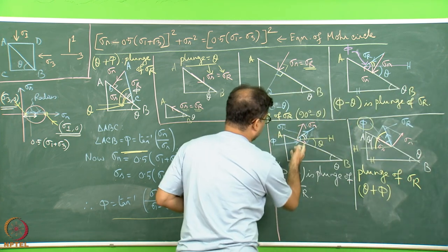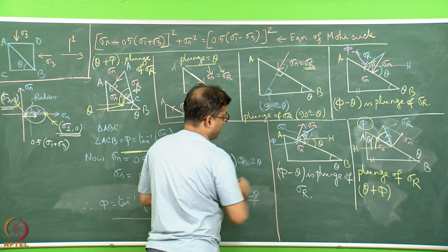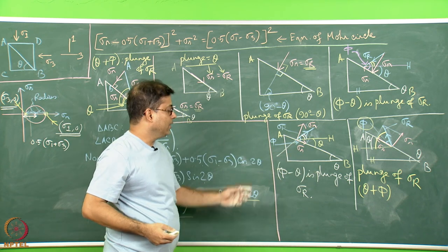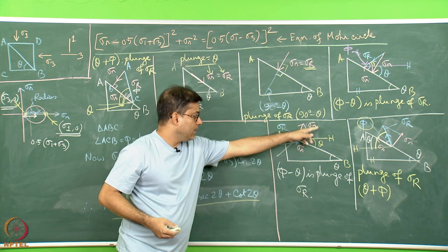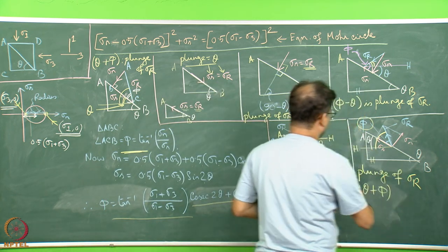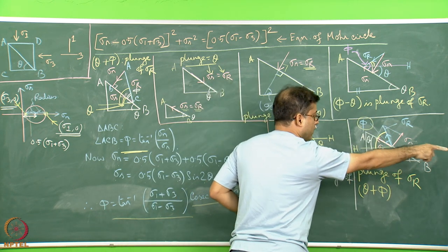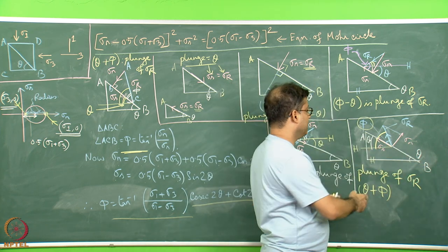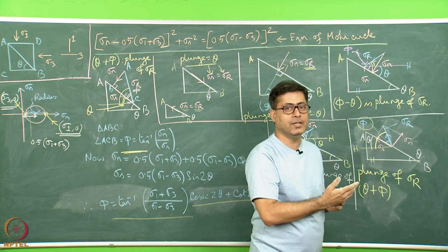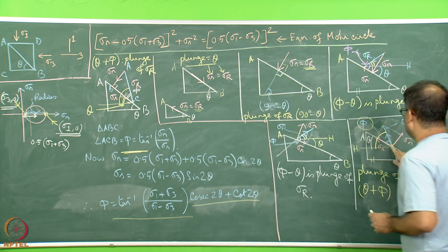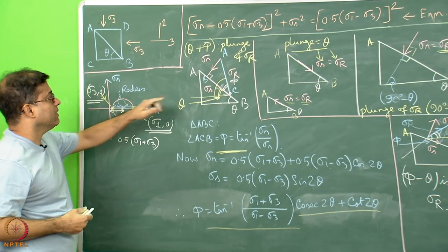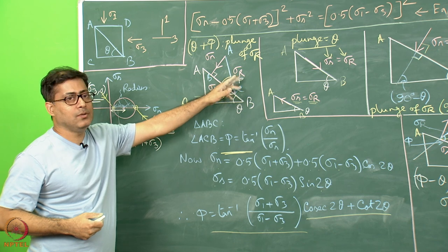When sigma R plunges opposite to the dip direction of AB — for example, if the dip direction is toward northwest, then sigma R trends toward southeast and acts in an up-plunge direction. In the last example with sigma S in the up-plunge direction and extensional sigma N, the resultant sigma R plunges toward the same side as the dip direction of AB. So the trend of sigma R matches the dip direction of AB, though the stress acts in the up-plunge direction.